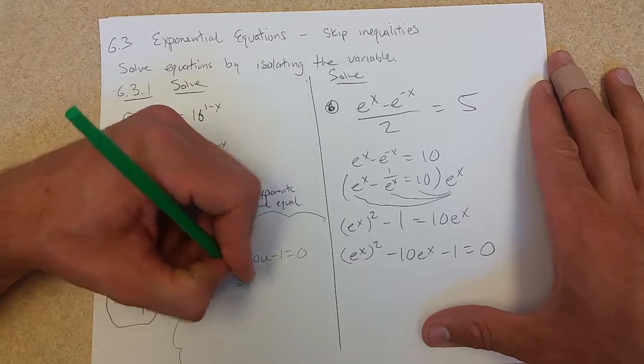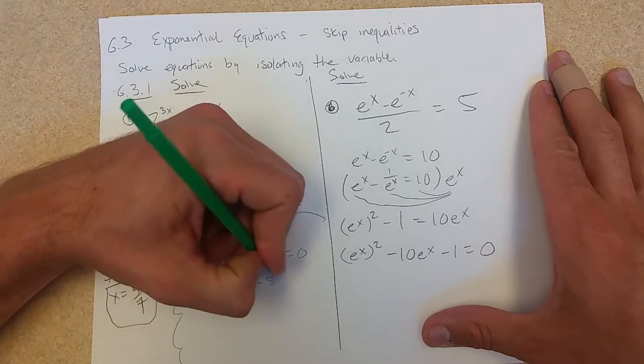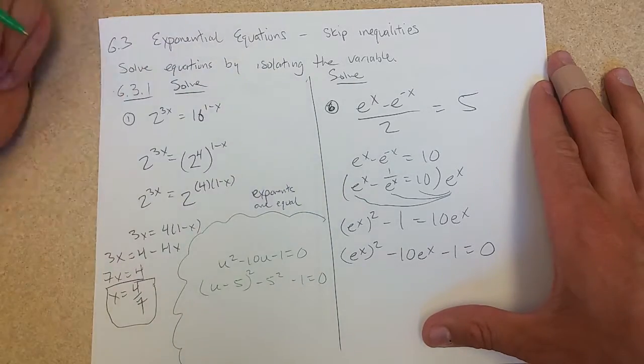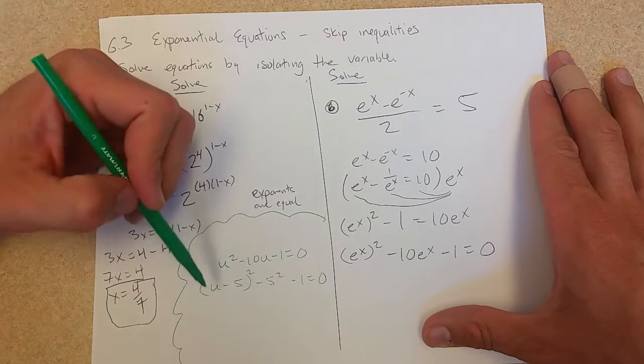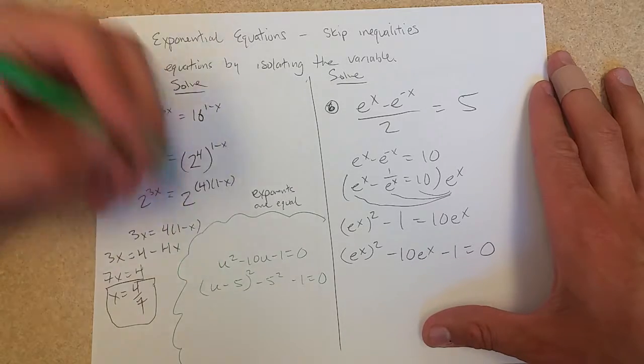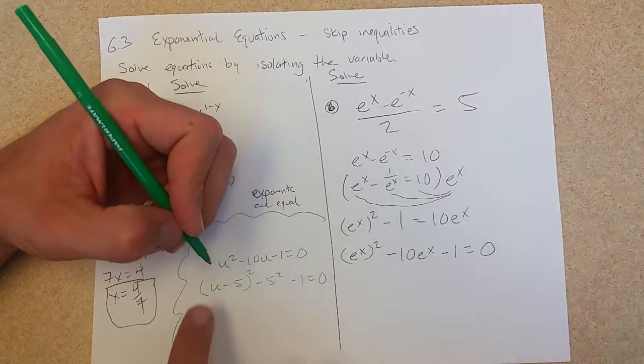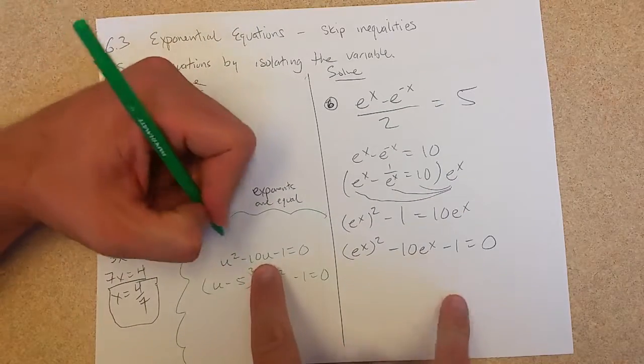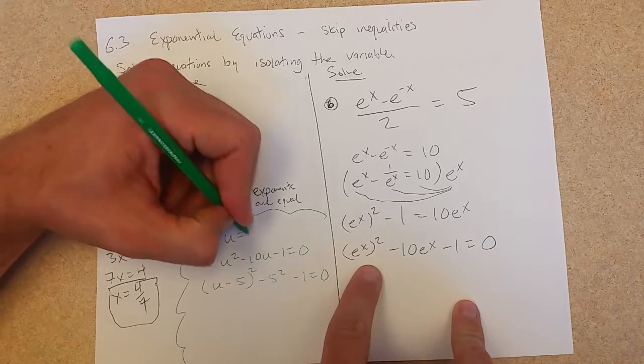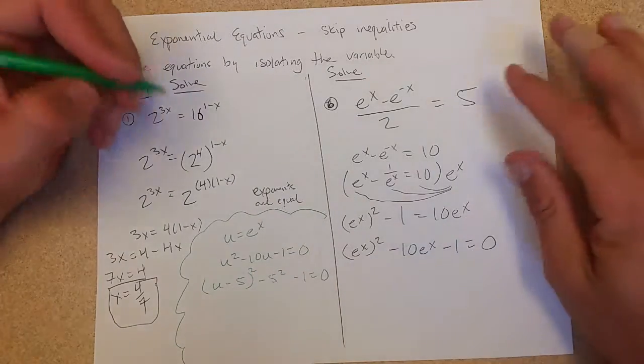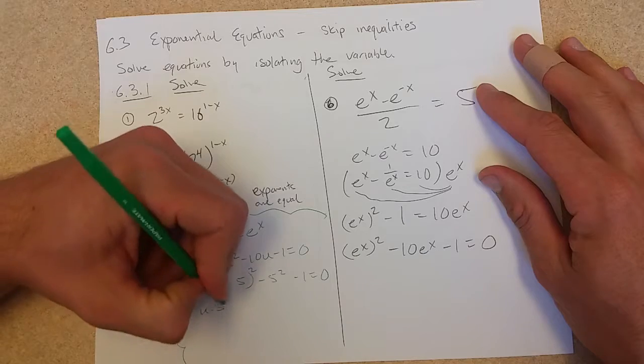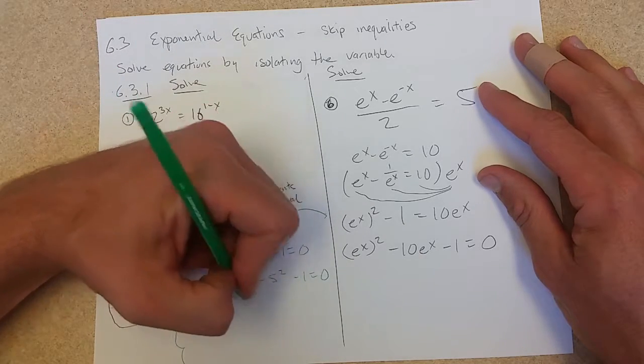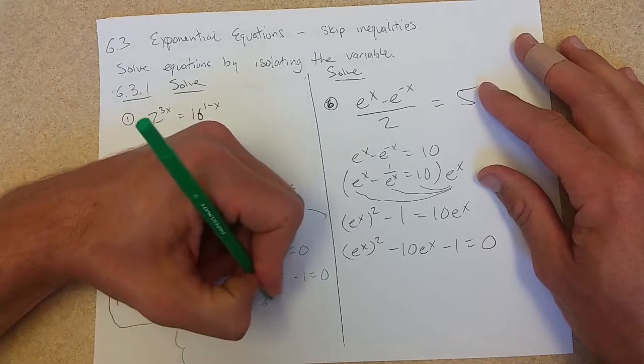So I'll complete the square. u minus half of 10 is 5. Minus 5 squared minus 1 equals 0. So we have, I'm going to solve for u right here. Now, why did I use u? How does that relate to this? u equals e to the x. So minus 25 minus 1 is 26. Minus 26.